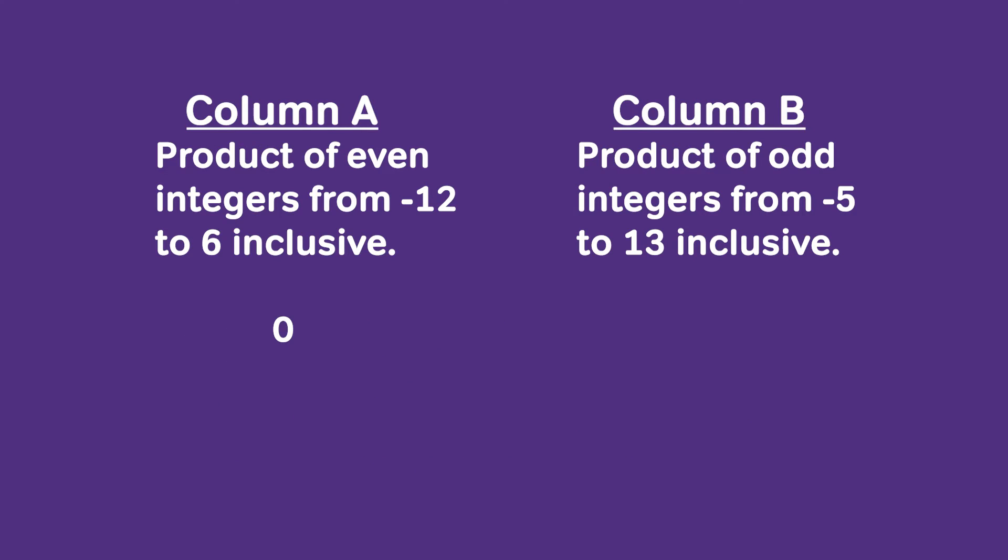Now on to column B. Let's take a closer look at this product. Notice that we have three negative numbers, so this product will be negative, and then we have a bunch of positive numbers, so this product will be positive.